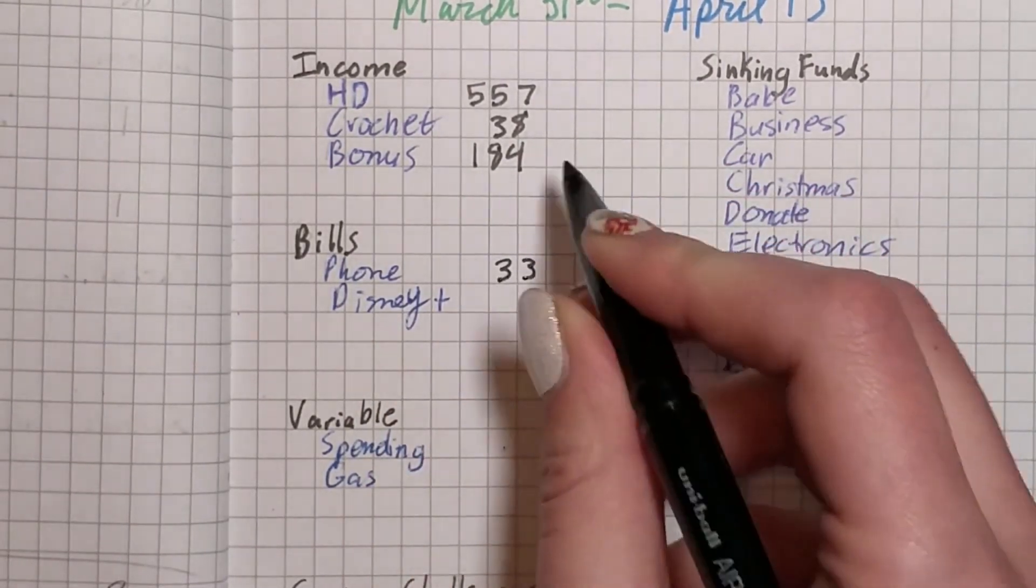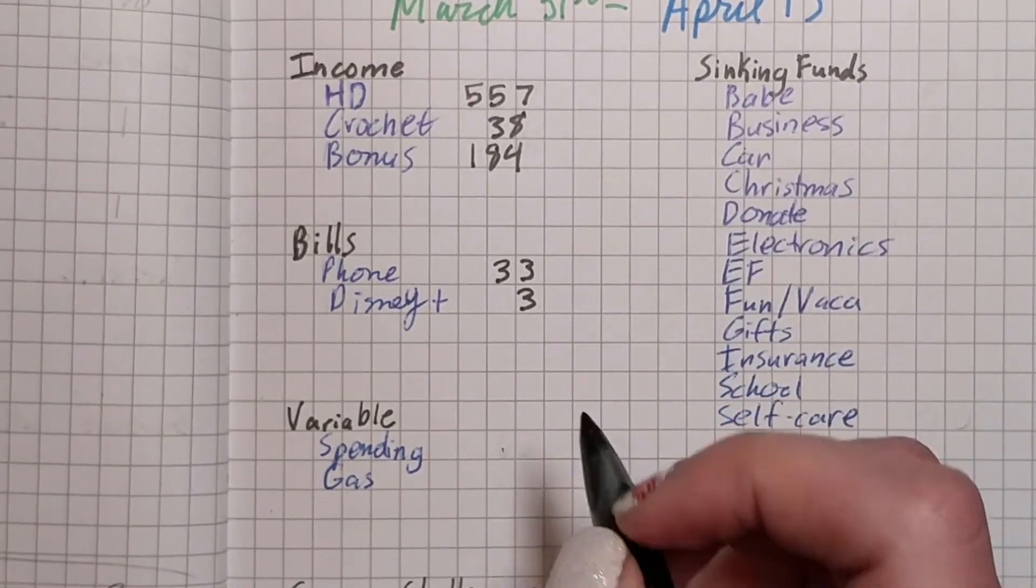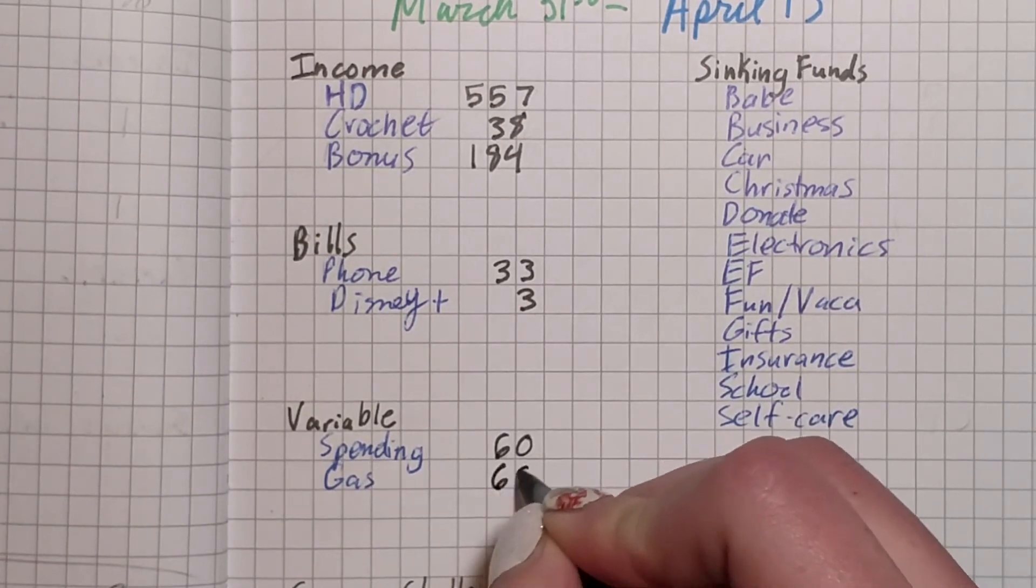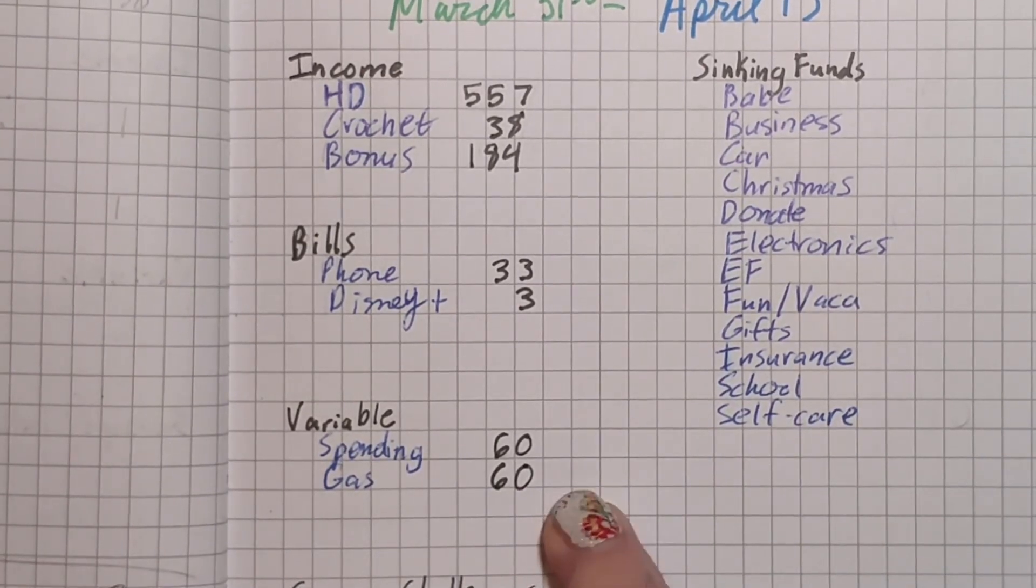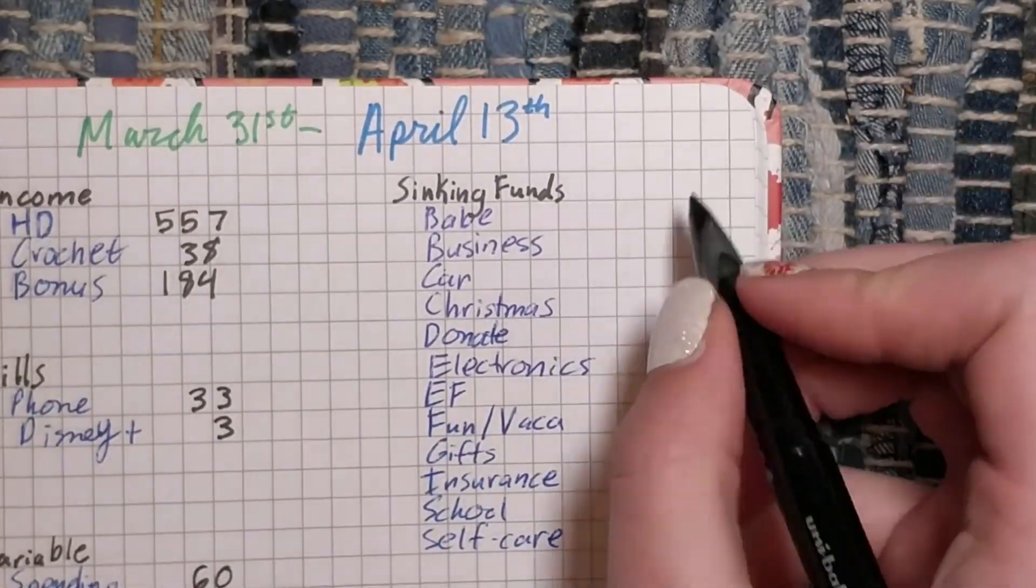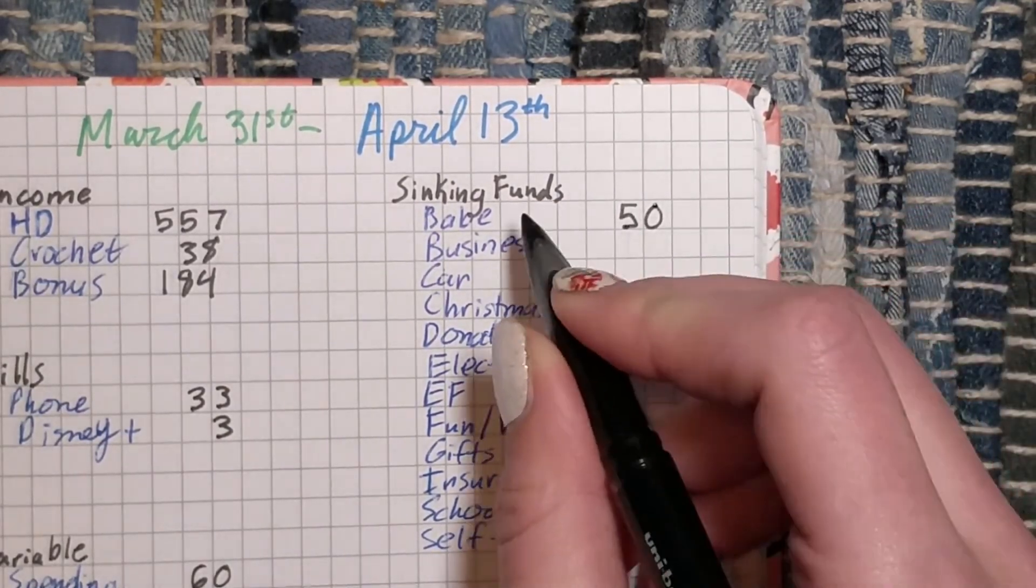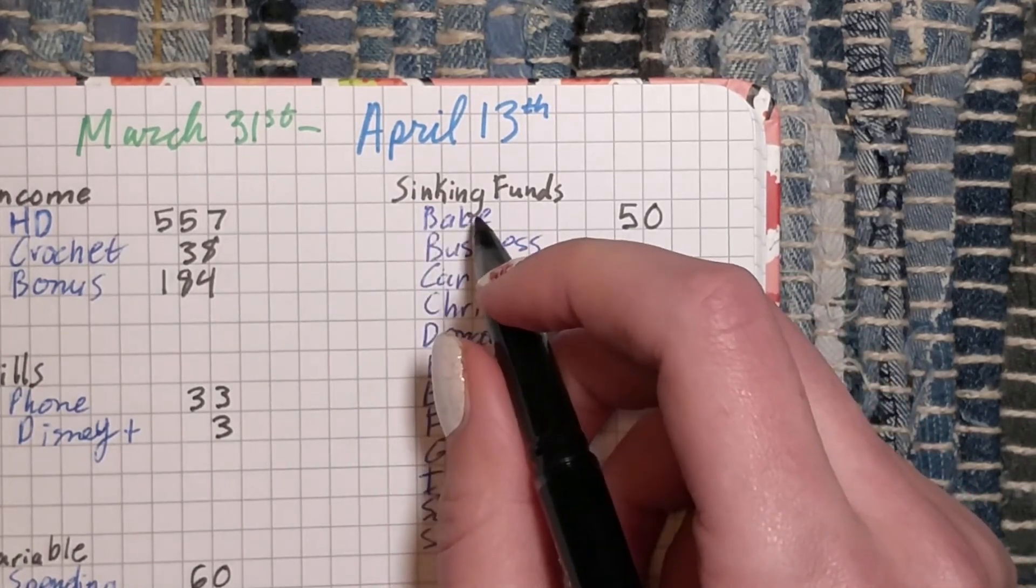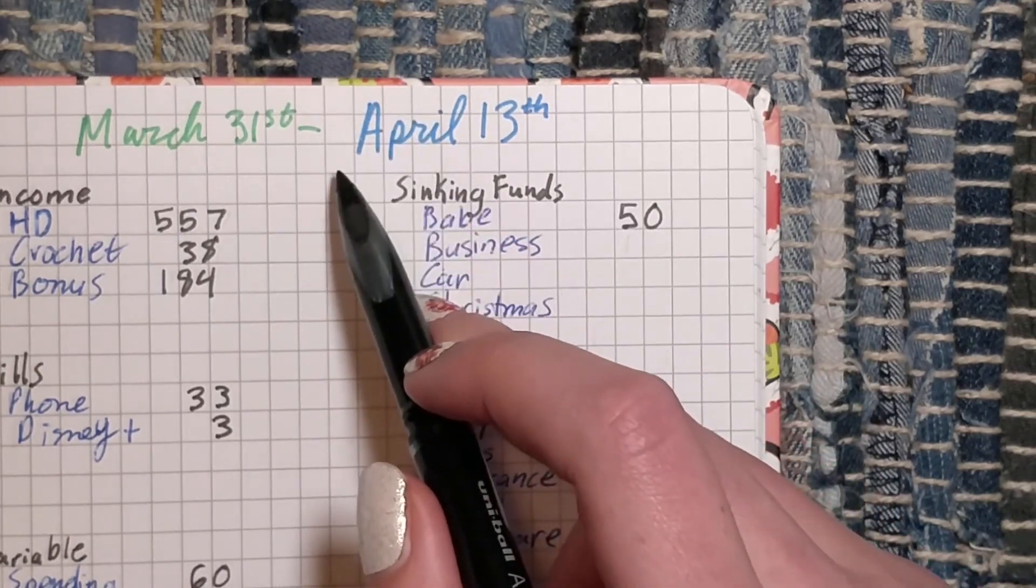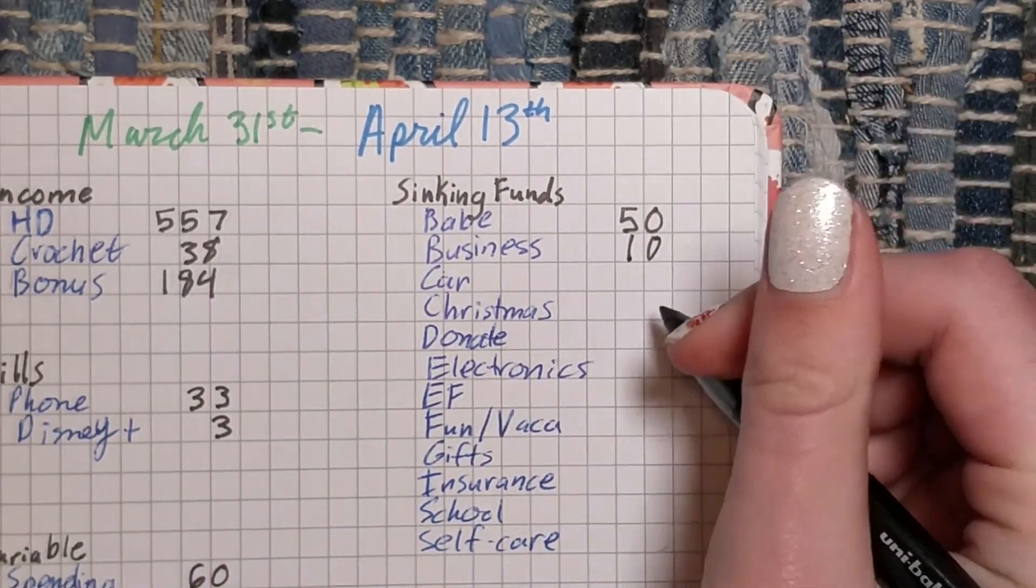Phone and Disney Plus are both due April 1st to my dad. Spending money is $60, gas is $60. I'm probably gonna have to increase this more because gas is at like $3.40 right now and it's ridiculous. I can't believe it's going back up again, it's very sad. Babe is getting $50, and that's a lot because my boyfriend's birthday is April 3rd. His birthday is the third and we're gonna celebrate it on the second, which is this Sunday.